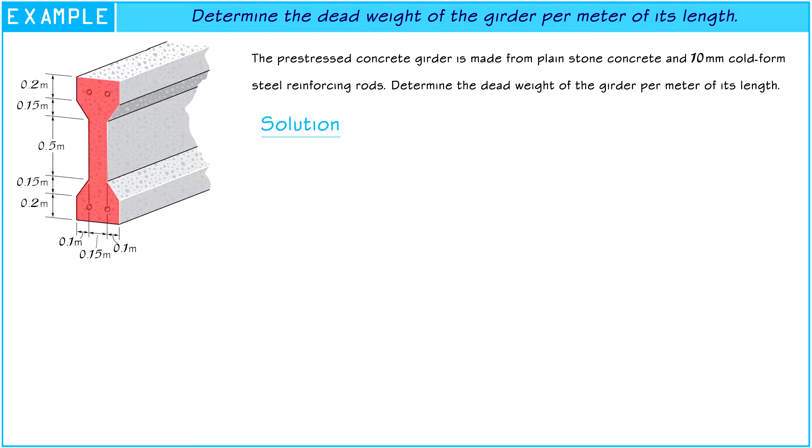So we must find the area of prestressed concrete and the area of steel reinforcement. Look at the picture, we know all dimensions of the girder. Especially, it is symmetry.